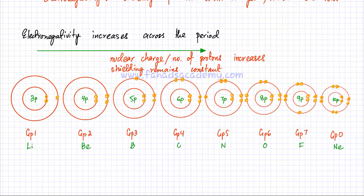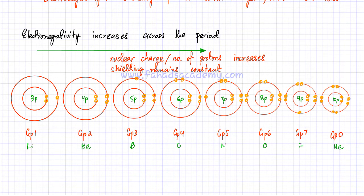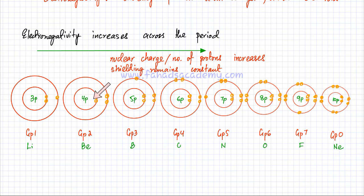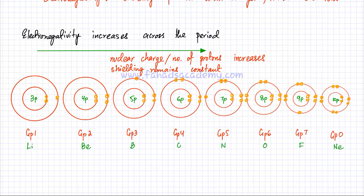These outer electrons would be attracted by the nucleus, and there's one inner shell that is shielding the nucleus — blocking the positive charge from reaching the outer electrons. But this shielding is constant in every atom. For example, the outer electron in lithium would be attracted to the three protons, but there are two electrons coming in between. This is the same for beryllium. So in all these atoms, the shielding effect remains constant.